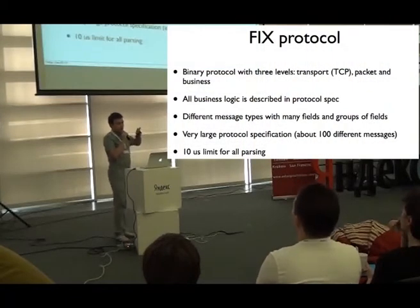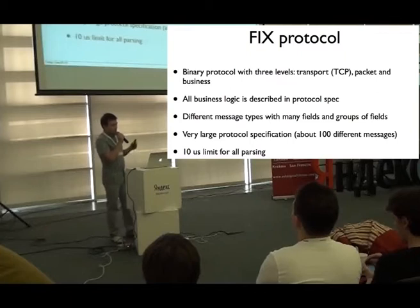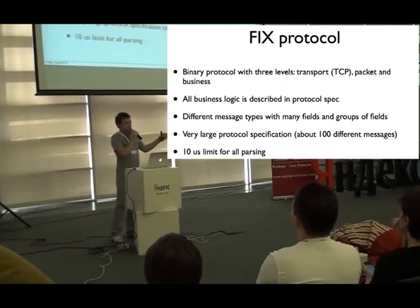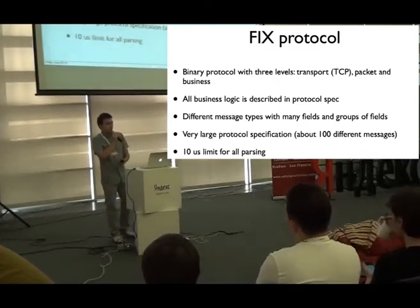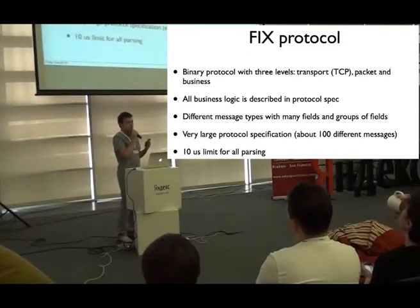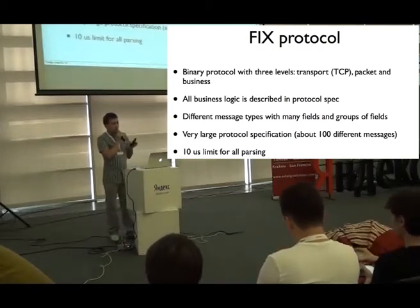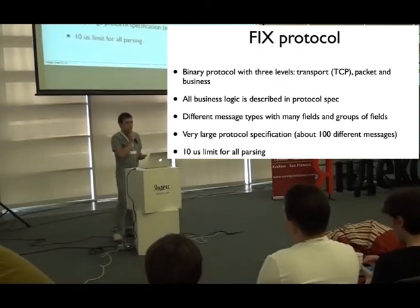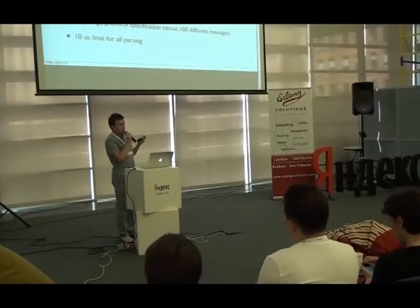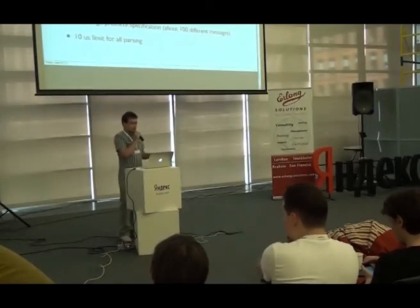FIX has all three levels. It is transport — you need to connect by TCP, and it is described by FIX. It describes packet level, so FIX tells you when a packet starts and when it is finished. And it describes business level — the specification describes all possible business level messages. It is a very big specification, more than 100 different messages. And I had a very big demand for speed: not more than 10 microseconds for parsing one message.